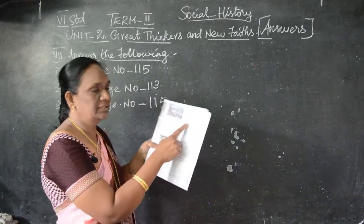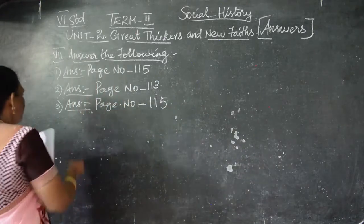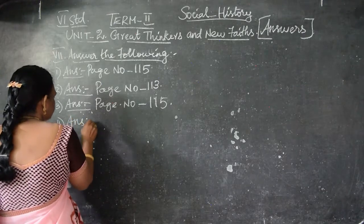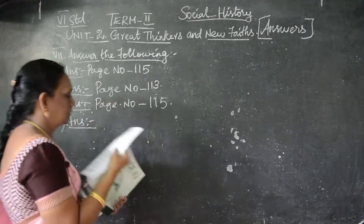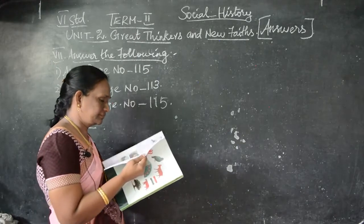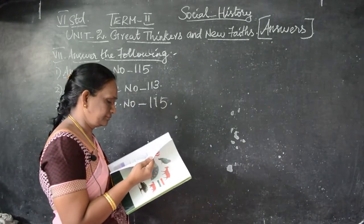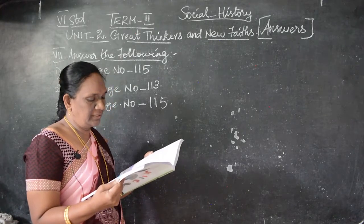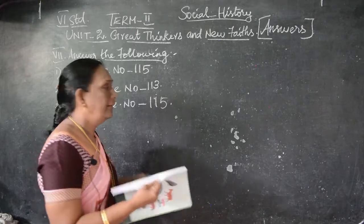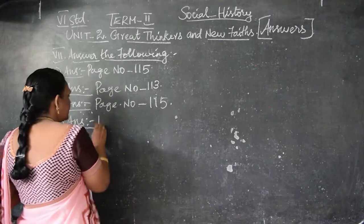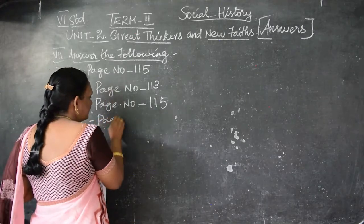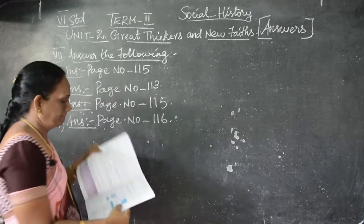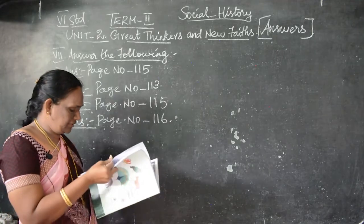This is the third answer. The fourth question: Write any three differences between Hinayana and Mahayana sects of Buddhism. It is on page number 116.